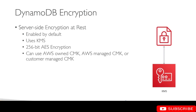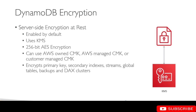We can use any of the CMK options — CMK stands for Customer Master Key, and that is the key used for encryption. We can use either the AWS owned CMK, the AWS managed CMK, or a customer managed CMK — all are supported. What gets encrypted includes the primary key, secondary indexes, streams, global tables, backups, and DAX clusters. All of these get encrypted when you enable server-side encryption.